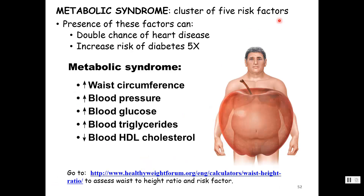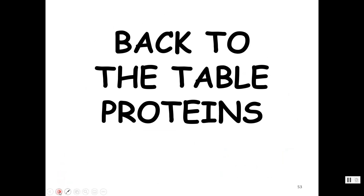There's now something called metabolic syndrome — a cluster of five risk factors that double your chance of heart disease and increase your risk of diabetes fivefold. The five factors are: high waist circumference, high blood pressure, high blood glucose levels, high blood triglycerides, and low blood HDL levels. You don't need all five to be at risk — the more you have, the higher the risk. We'll resume in part three.